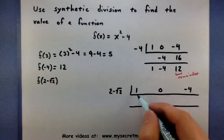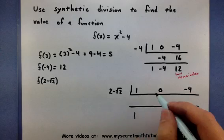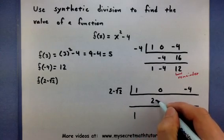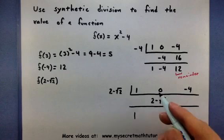So it starts off okay. I bring my 1 down just as it is. I multiply. Then I add these two together.